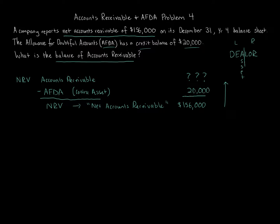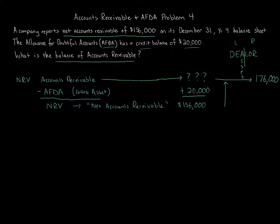Now we know our formula: accounts receivable (unknown) minus $20,000 equals $156,000. Using algebra, we take $156,000 plus $20,000, which gives us $176,000. So accounts receivable is $176,000. That is: $176,000 minus AFDA of $20,000 gives us a net balance of $156,000 NRV. The correct answer is $176,000 — that is the balance of accounts receivable.